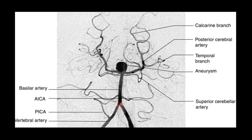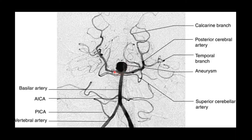Moving up, the vertebral-basilar junction is in relationship to the clivus. The ICA comes out forming its loop — this is about the level of CNs 7 and 8 entering the IAC. Coming up higher we reach the SCA — beneath the tentorium, beneath CN 3, coming around to supply the superior surface of the cerebellum. Then we encounter the basilar tip aneurysm and can see the basilar artery becoming each of the posterior cerebral arteries as they go up and back.